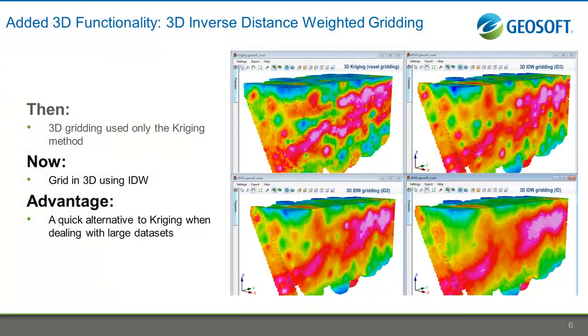We have also added the inverse distance weighted gridding algorithm to both Target and Target for ArcGIS, allowing you to grid your geological data in 3D with a faster alternative to Kriging.